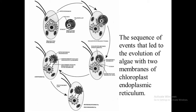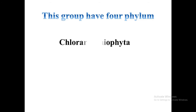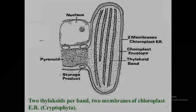This group has four phyla. The first is Chlorarachniophyta, which has a chloroplast derived from a green alga — therefore chlorophyll A and B are present, as in green algae. The next group is Cryptophyta or cryptophytes, in which starch is formed as grains between the inner membrane of the chloroplast endoplasmic reticulum and the chloroplast envelope. In this group, chlorophyll A along with C and phycobiliprotein is the main photosynthetic pigment, and a periplast inside the plasma membrane is also present.